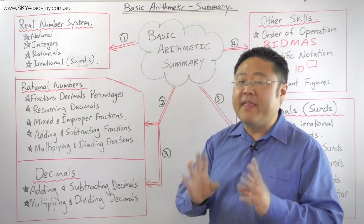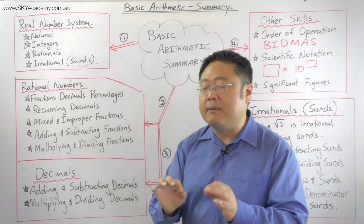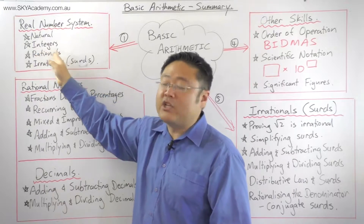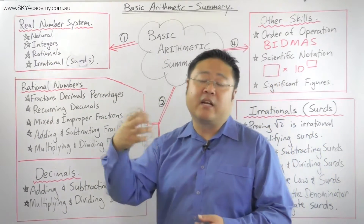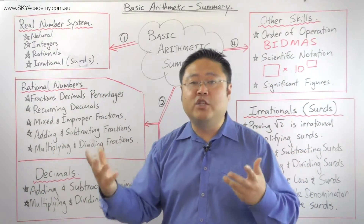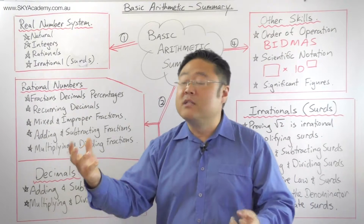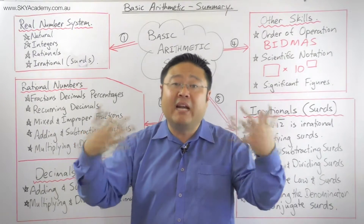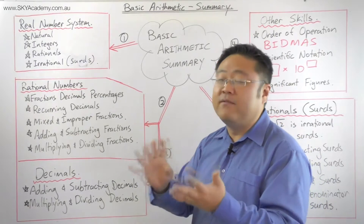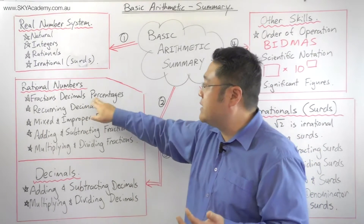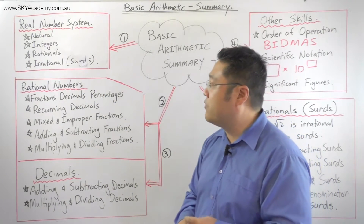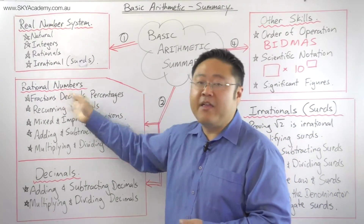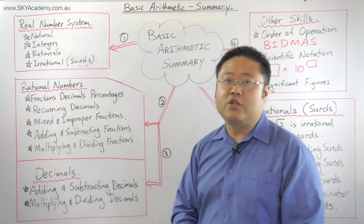After integers, we looked at rational numbers. In the word 'rational' is the word 'ratio' — a comparison between two numbers. A rational number is one that can be expressed as a comparison between two numbers, i.e., a number that can be divided into parts. Fractions, decimals, and percentages make up the rational numbers, depending on how they're expressed.